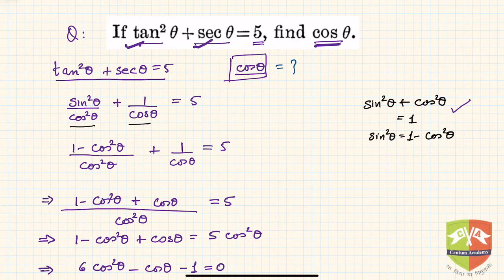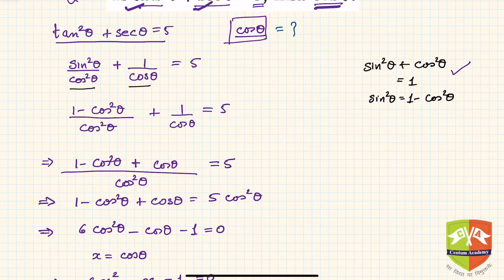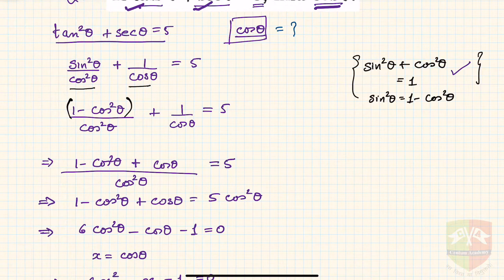Now using the identity sin²θ + cos²θ = 1, we can express sin²θ as 1 - cos²θ. Hence, (1 - cos²θ)/cos²θ + 1/cosθ = 5. This is step number 2.